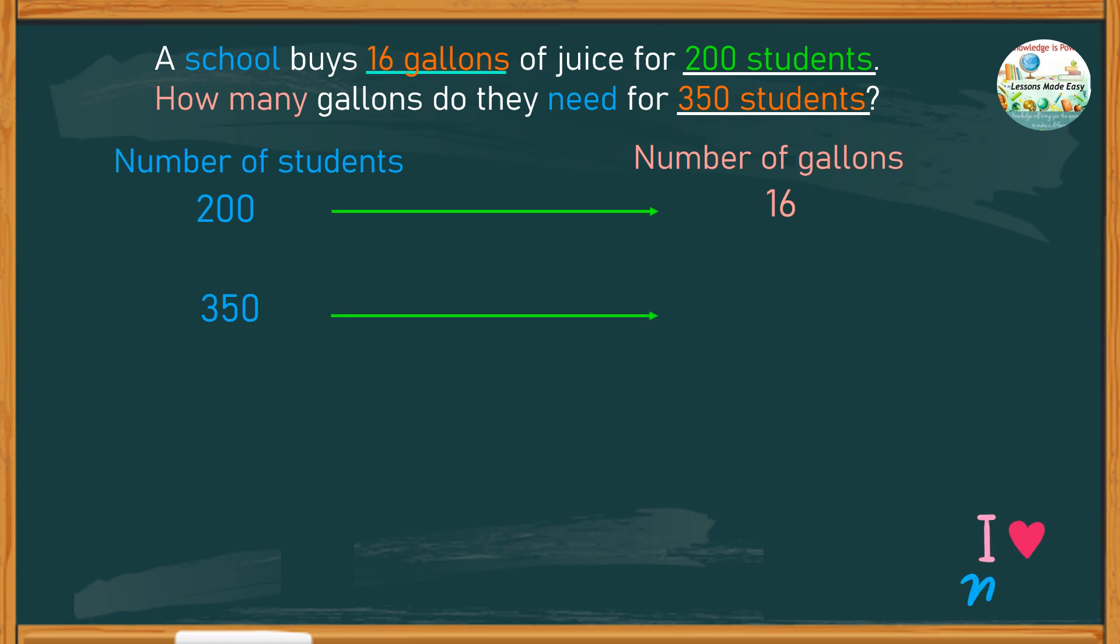Obviously, when we increase the number of students, the amount of juice must also increase. This type of relationship is known as direct proportion. It means when one quantity is increasing, the other increases in the same proportion.